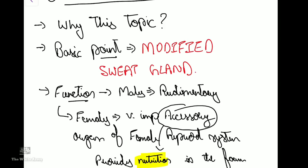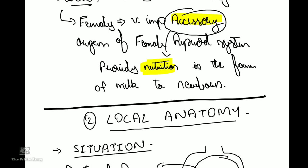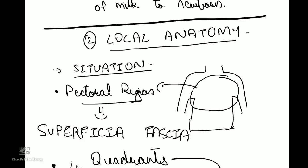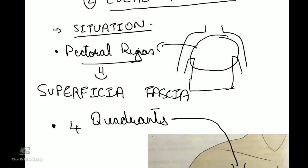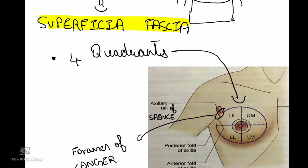The breast is situated in the pectoral region of our body and lies over the superficial fascia. It is divided into four quadrants: the upper lateral, upper medial, lower medial, and lower lateral quadrant. There is a small extension of the breast called the axillary tail of Spence, which arises from the upper lateral part and passes through the foramen of Langer to lie in the deep fascia.